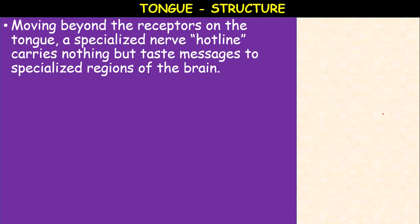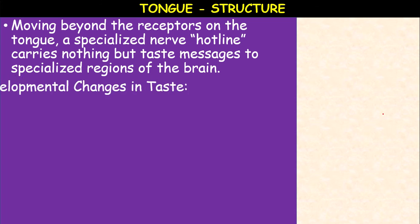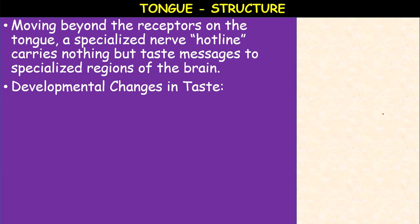Moving beyond the receptors on the tongue, a specialized nerve carries taste messages to specialized regions of the brain. This is the gustatory region — the region in the brain which processes taste. All sense organs are connected to the brain, and it is the brain with which we are able to get the response.